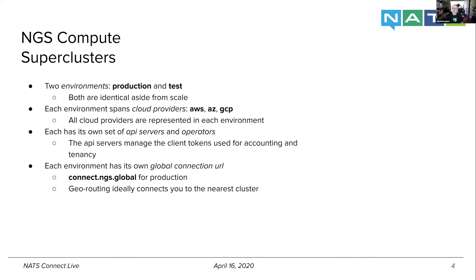We have a production and test environment — that should not be a surprise to anyone in the ops world. Each environment spans the three major cloud providers: AWS, Azure, and GCP. We could add more, but that comes with operational costs of making sure they're working consistently across the different pieces. All cloud providers are represented in each environment. Our test environment has one cluster of each; our production environment doubles down, and in one case quadruples down, on different clusters in different regions across the world.